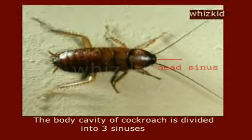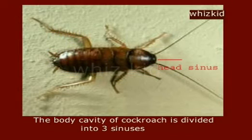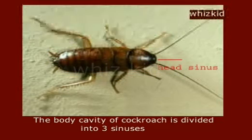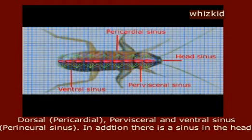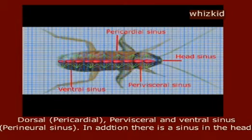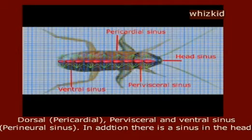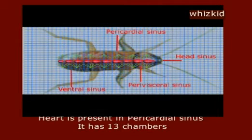The body cavity of cockroach is divided into three sinuses: dorsal, perivisceral, and ventral sinus. In addition, there is a sinus in the head. The heart is present in the pericardial sinus.